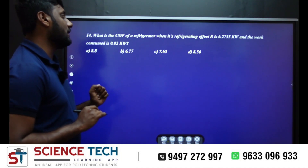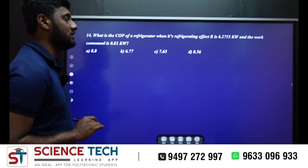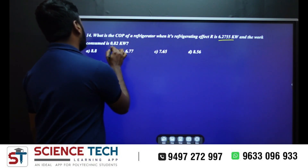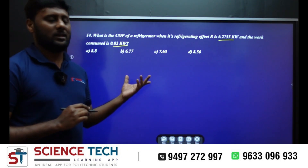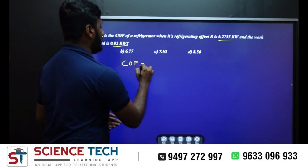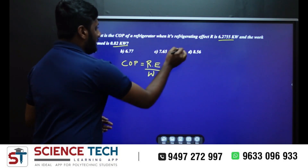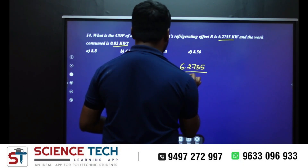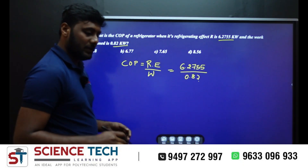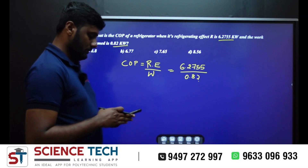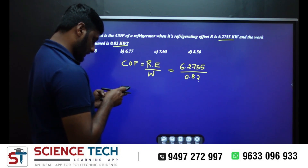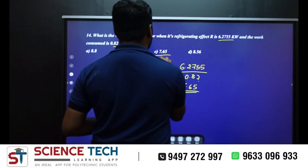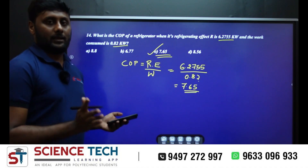What is the COP of the refrigerator when its refrigerating effect is 6.2755 kilowatt and the work consumed is 0.82 kilowatt? A simple question: COP equals refrigerating effect divided by work. That is 6.2755 divided by 0.82, which gives the direct answer of 7.65. Simple question, simple answer.